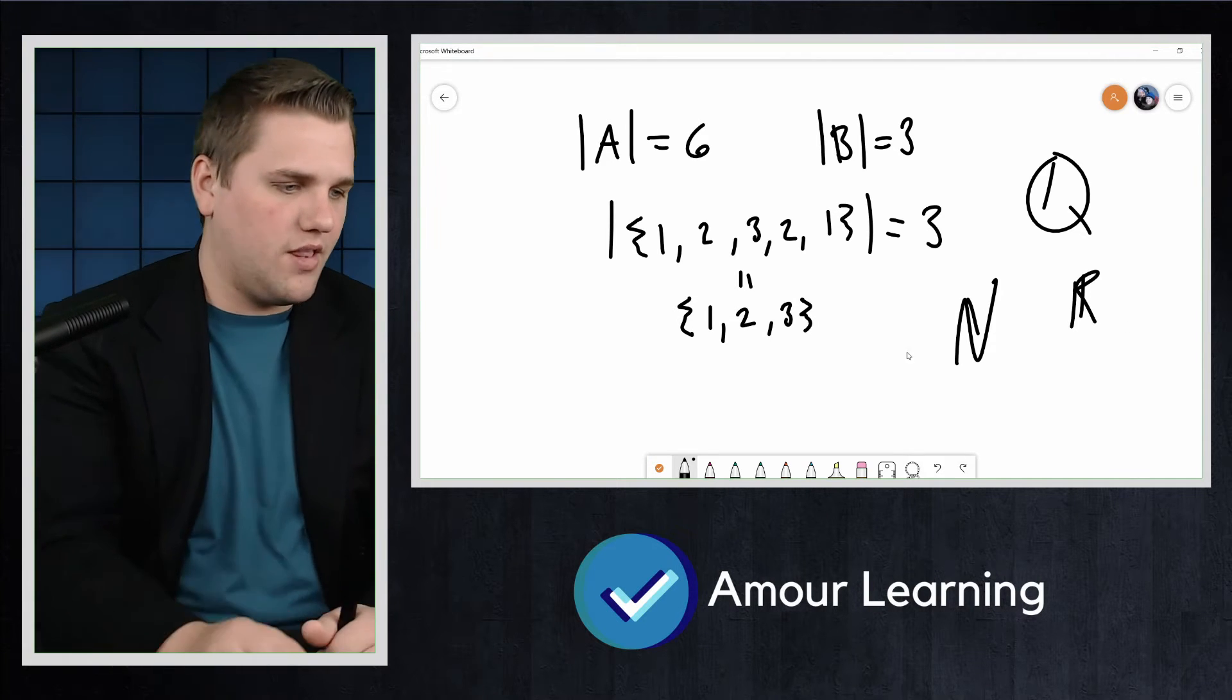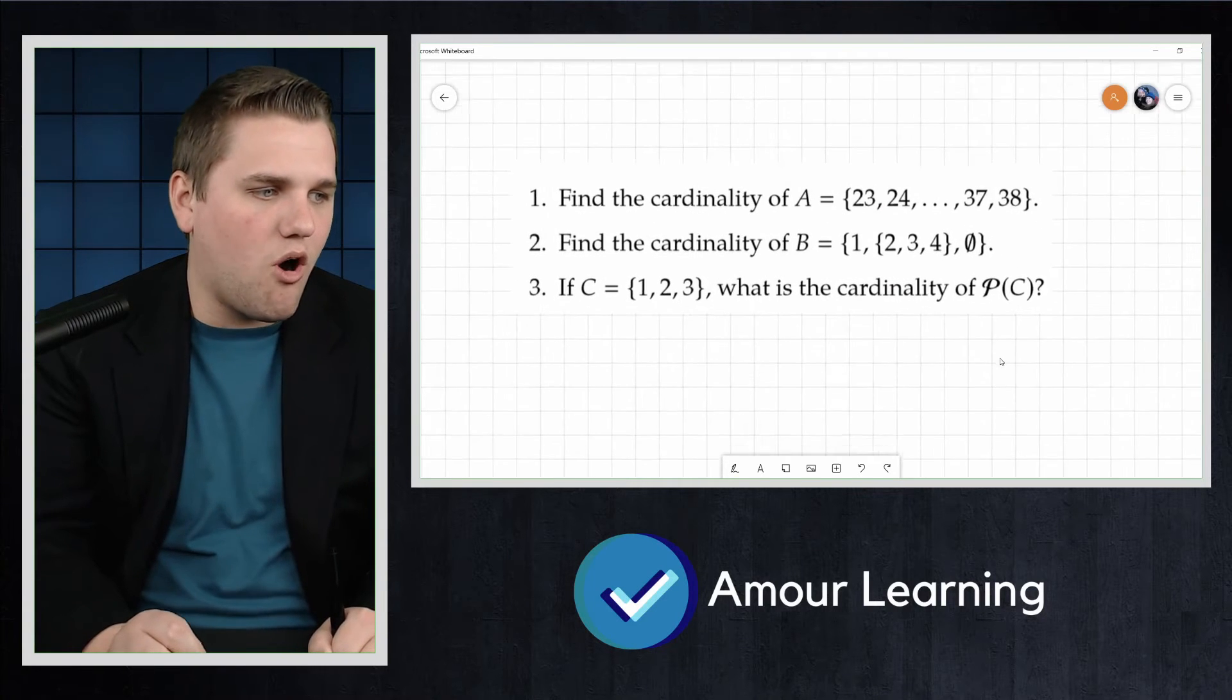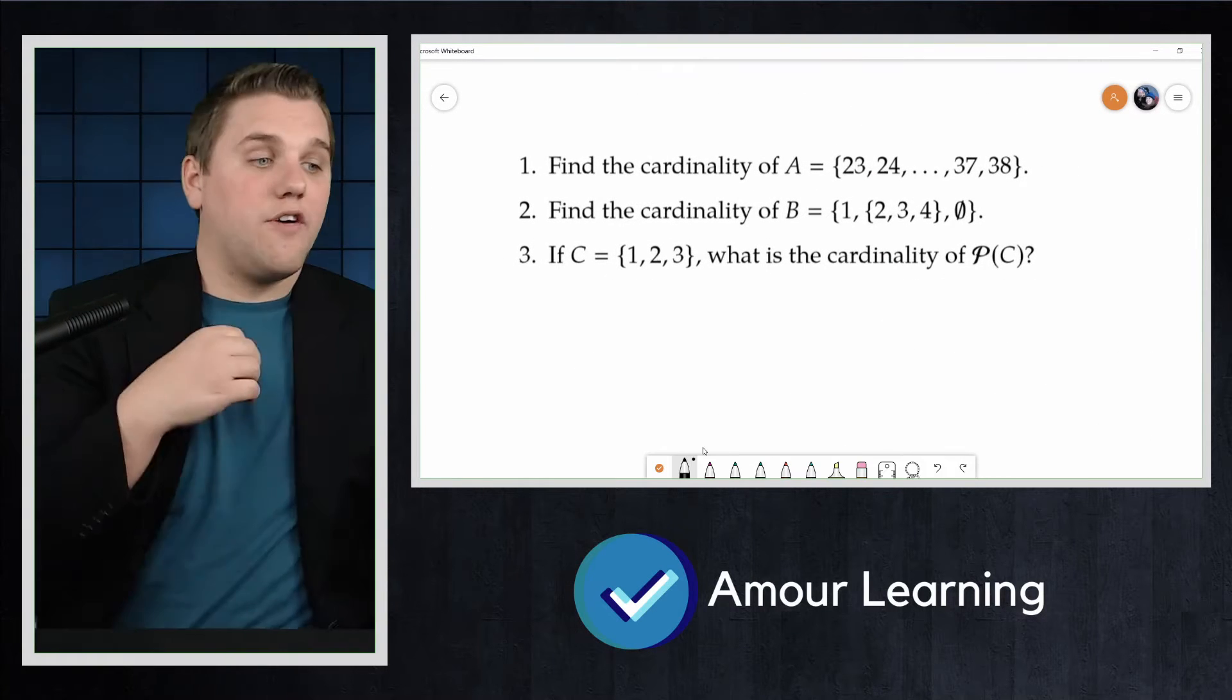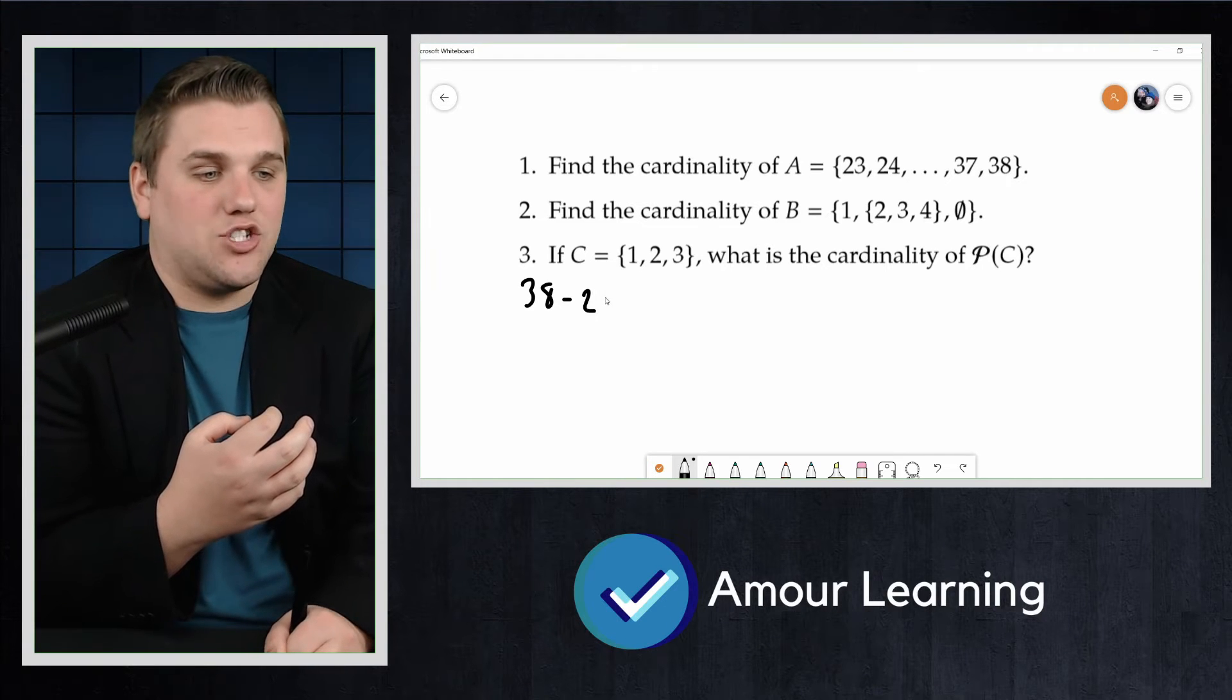Let's do an example together. Let's find the cardinality of the set A, which is {23, 24, ..., 38}. For number one, we can't quite just do 38 minus 23.